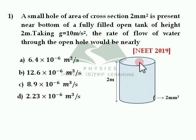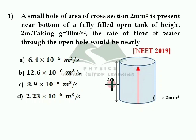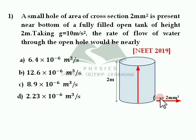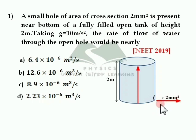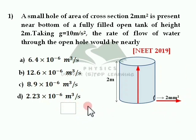As per this problem, we need to consider an open tank which is fully filled — that means the height up to which water is filled is equal to the height of the tank itself. It is given that there is a hole at the bottom of the tank through which water flows out. What they have asked is to calculate the rate of flow of water through this open hole.